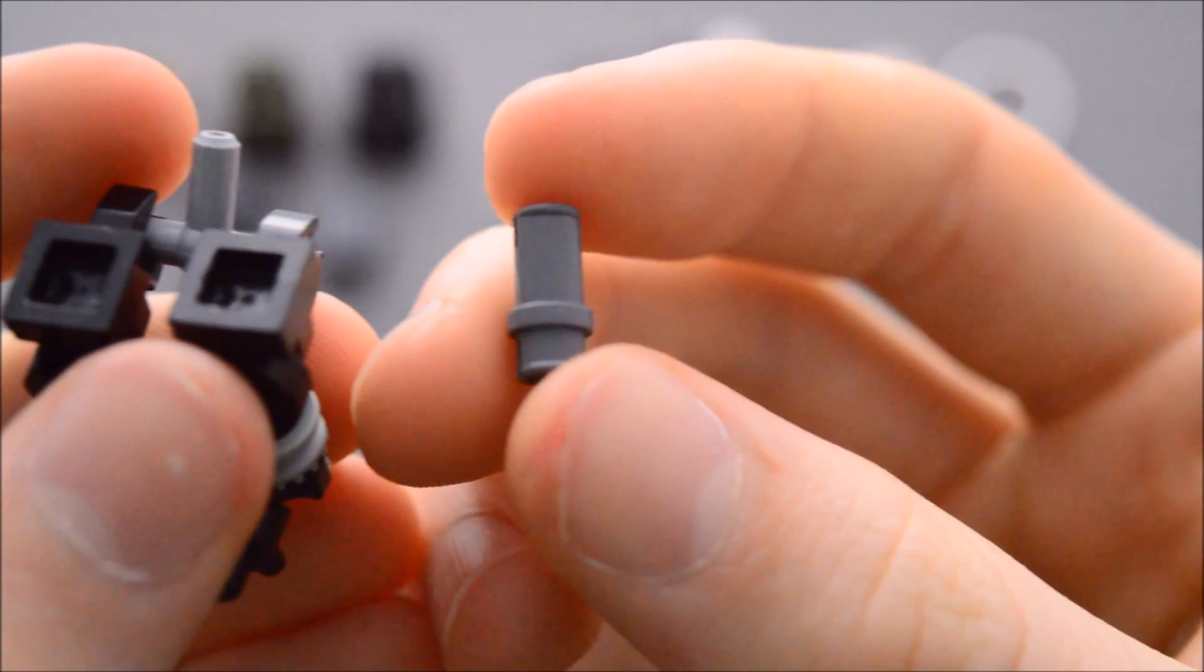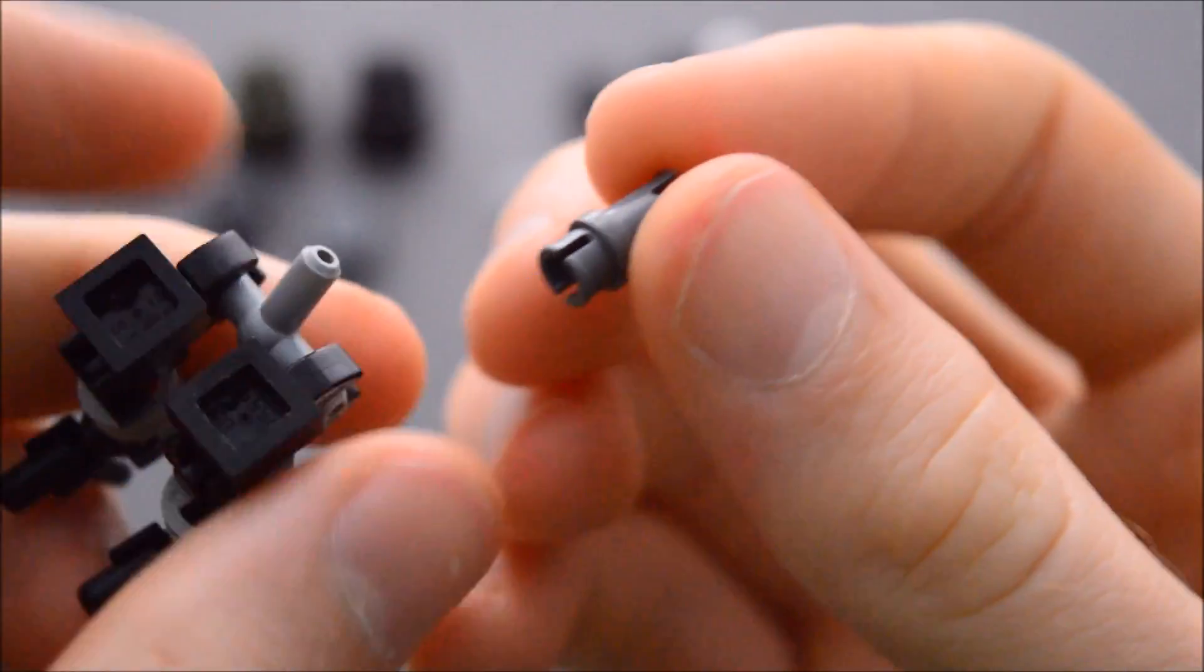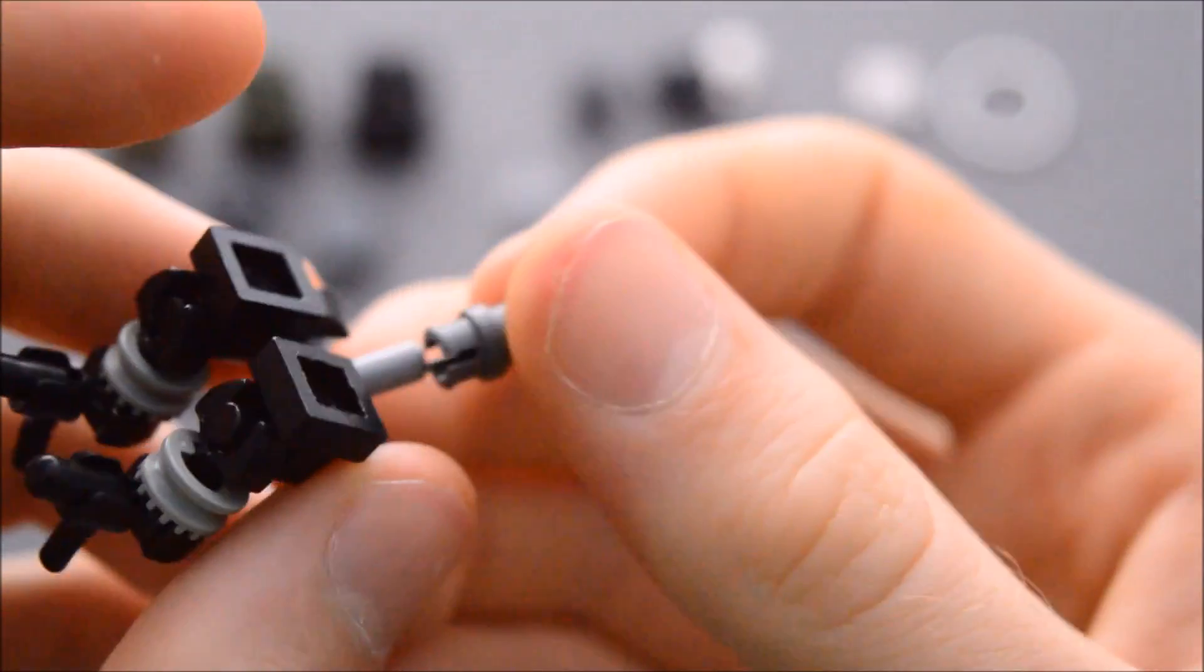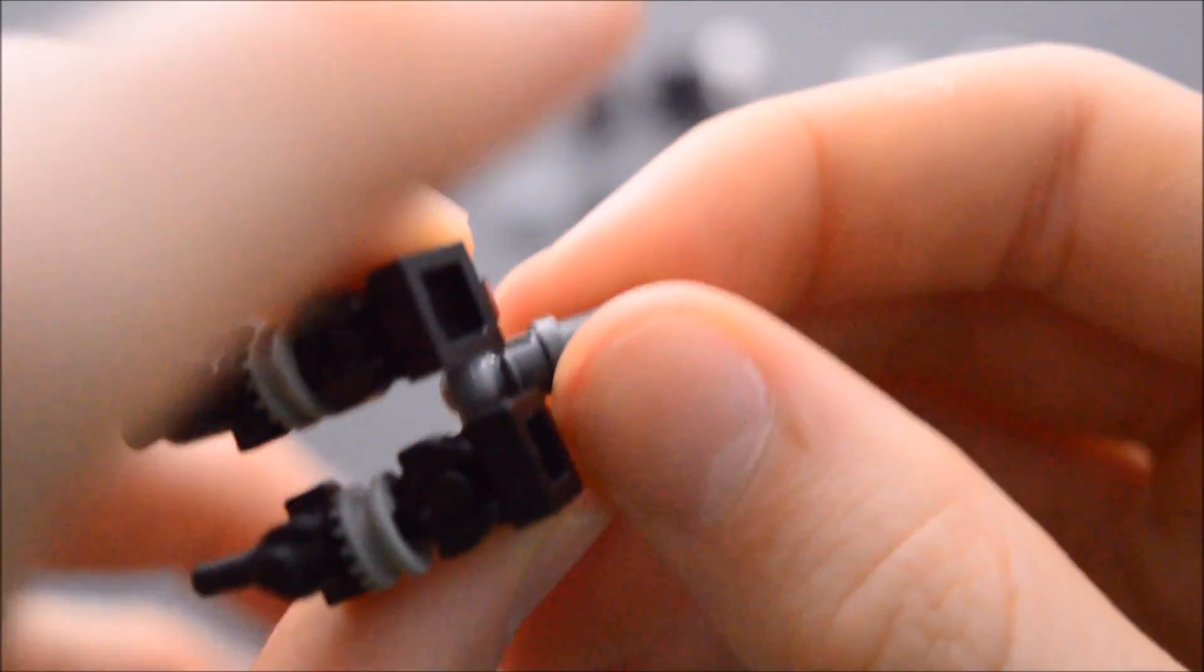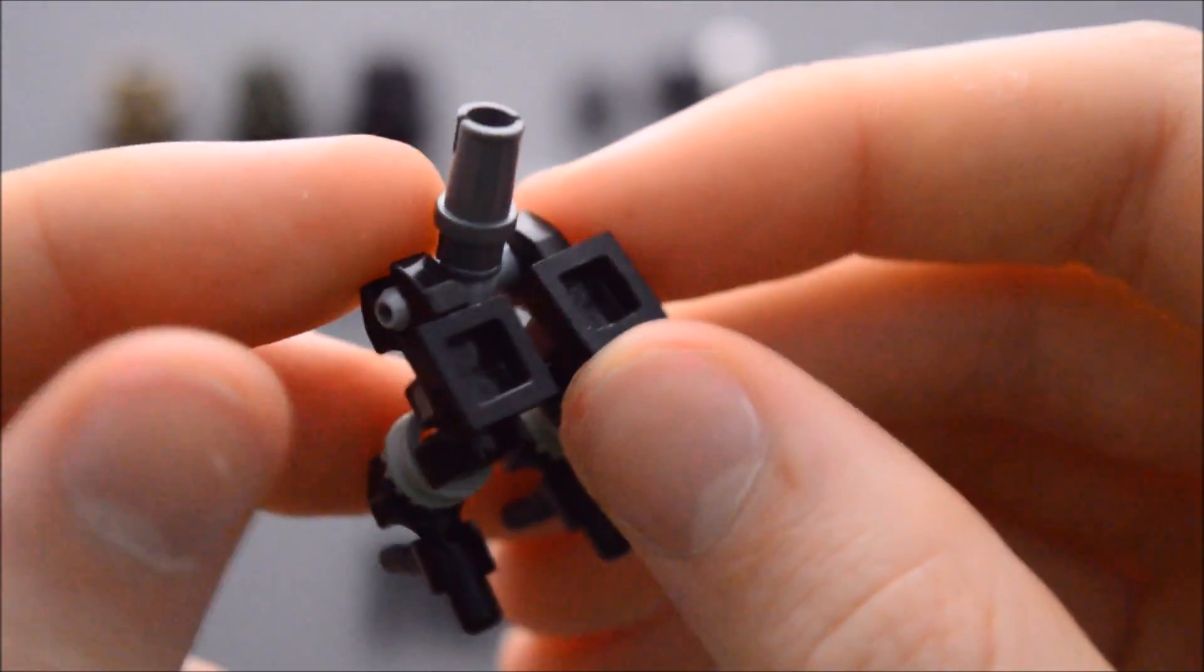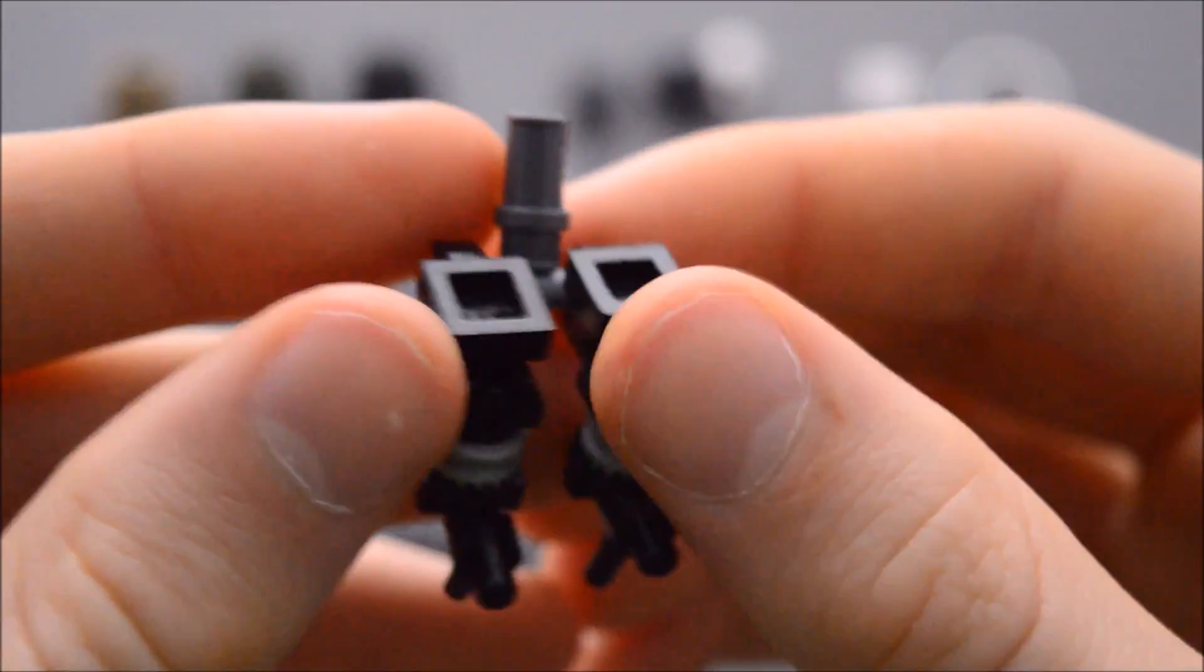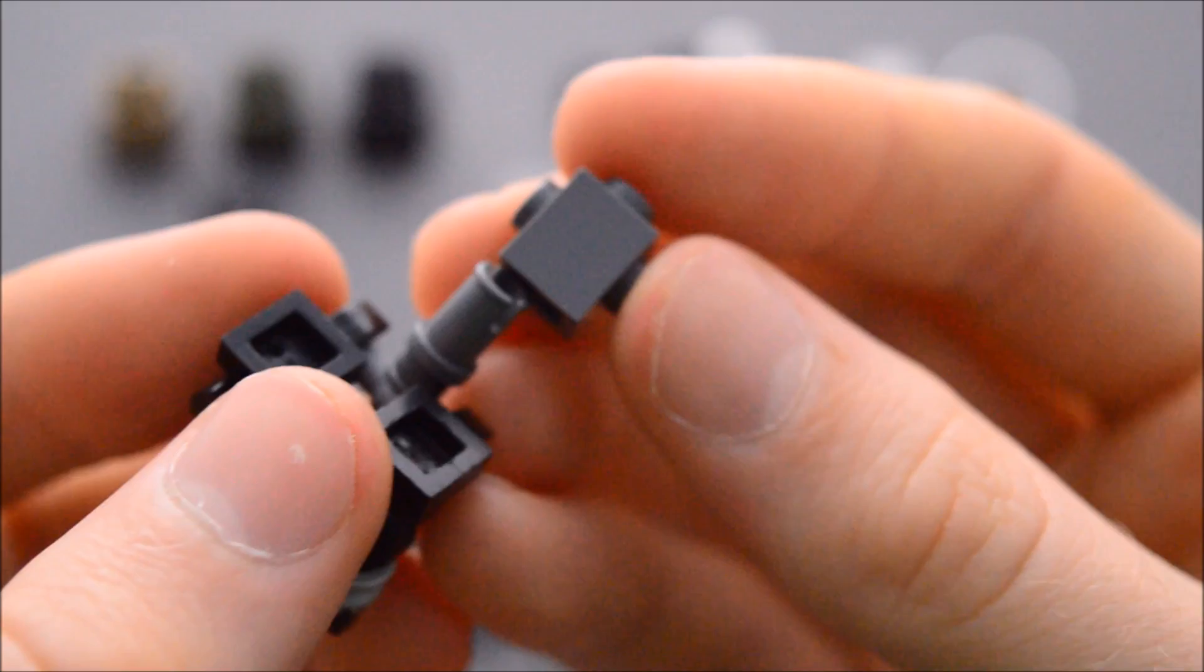And then we're going to take a dark gray technic pin with a half on one side. These only come in dark gray normally. I have seen them in purple though, those are pretty cool, but they only normally come in dark gray.